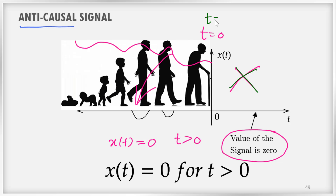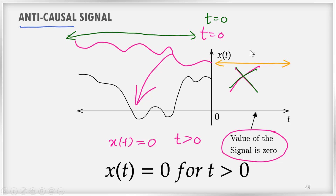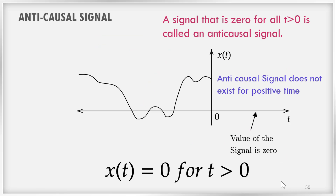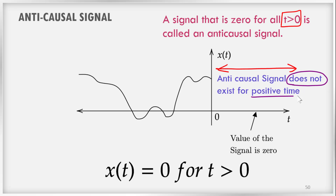For an analogy, consider the death of a person. If somebody died today, we take t=0 for today. He was present in the past and had a number of years on this earth, but he is physically absent from today onwards. The signal is absent after t=0, or its value is 0 after t=0. A signal that is 0 for all t greater than 0 is called an anti-causal signal — it does not exist for the positive time axis. Mathematically, x(t) = 0 for t greater than 0. These are the definitions of causal, non-causal, and anti-causal signals.